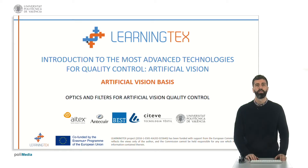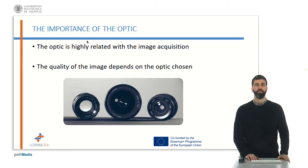Hello. In this unit, the student will know the different optics and filters for artificial vision defect detection. We will focus on the most important optics and filters used in artificial vision. The optic is one of the most important elements in the artificial vision technique. It is in charge of image acquisition, so choosing the wrong optics for your purpose could make the technique unusable. The quality of the image is directly related to the optic chosen.